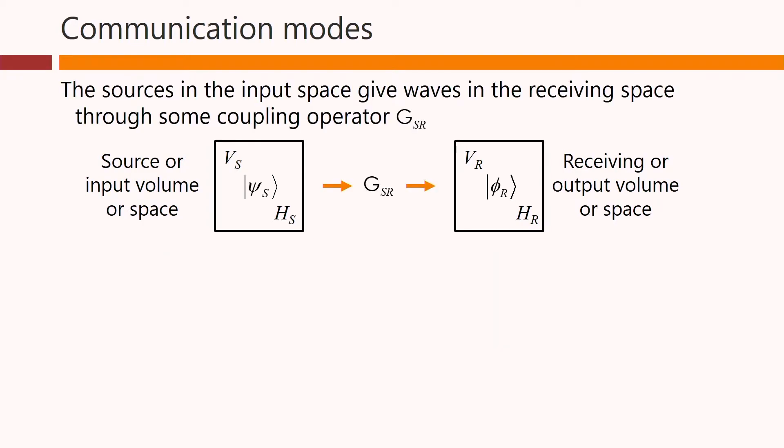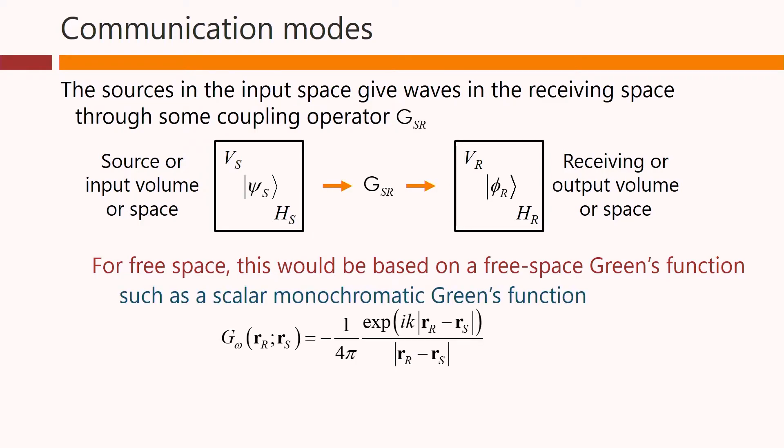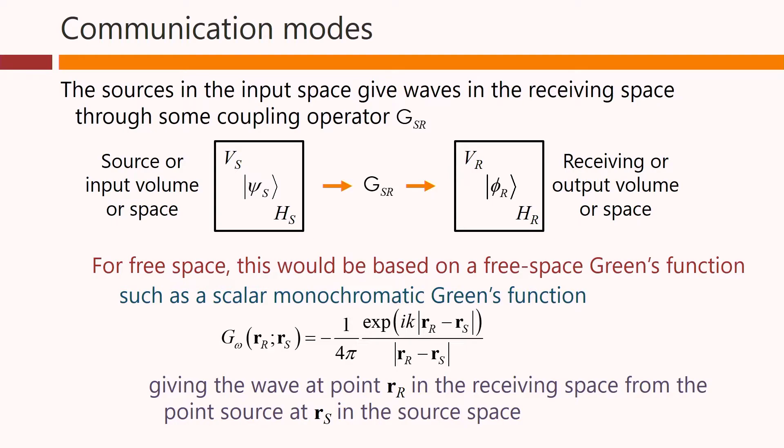The sources in the input space give waves in the receiving space through some coupling operator, which we'll call G_sr here. For free space, this would be based on a free space Green's function, such as a scalar monochromatic Green's function like this one here. And what a Green's function does is it gives the wave at some point r_r in the receiving space that results from the point source at r_s in the source space.